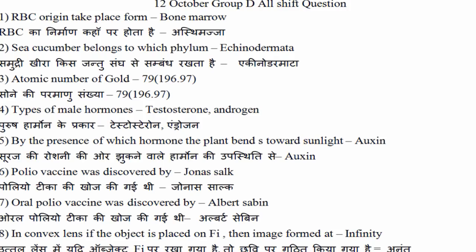Gold की परमाणु संख्या पूछी है सोने की. तो 79 होता है इसकी परमाणु संख्या. और इसका जो द्रव्यमान होता है, परमाणु द्रव्यमान वो रहता है 196.97. आप इसको simple 196 ही याद कर सकते हैं.